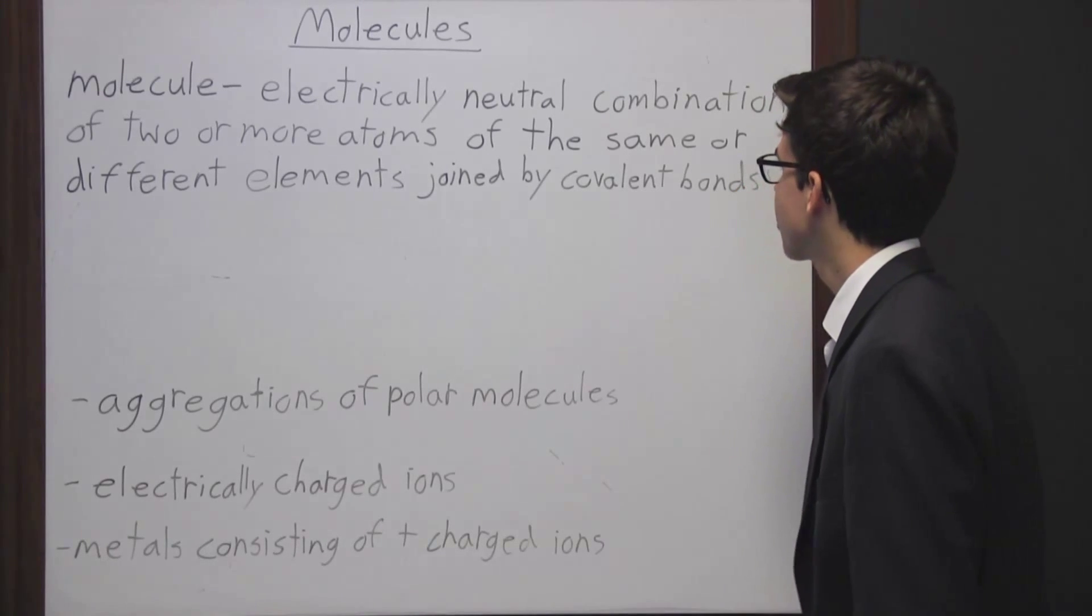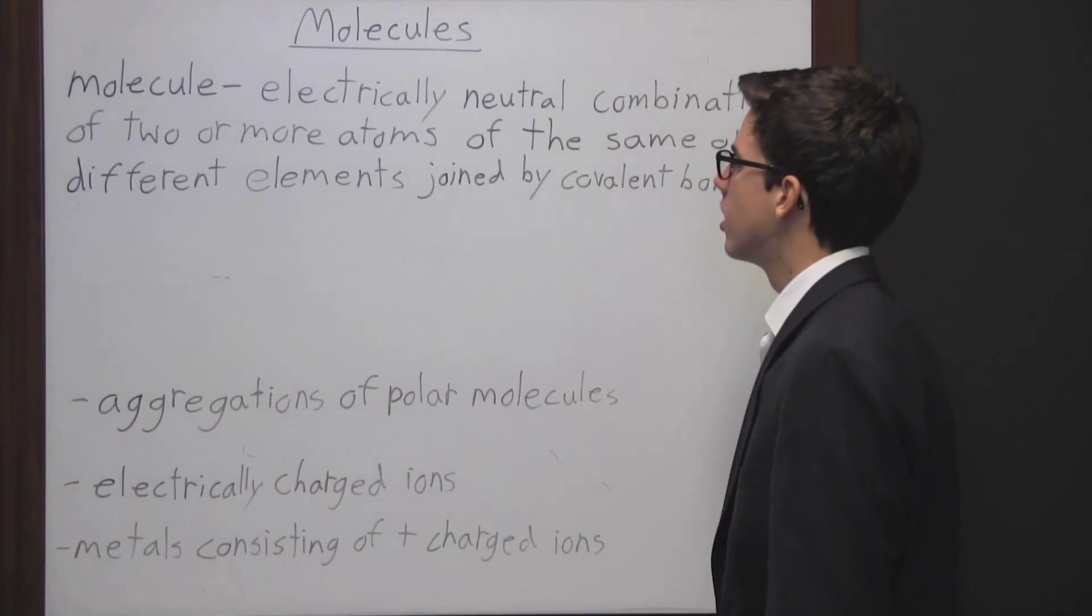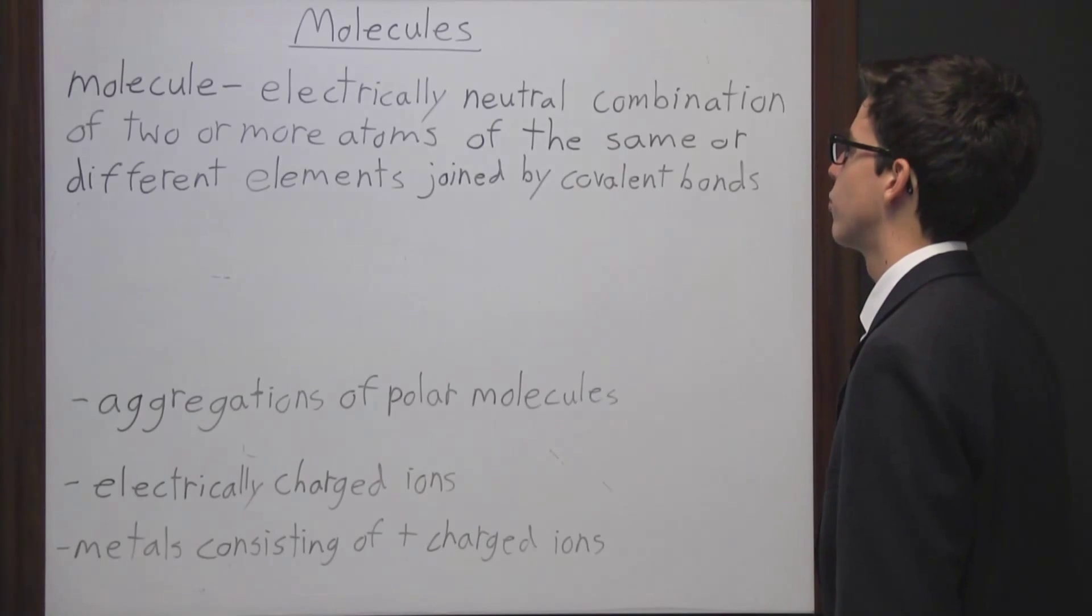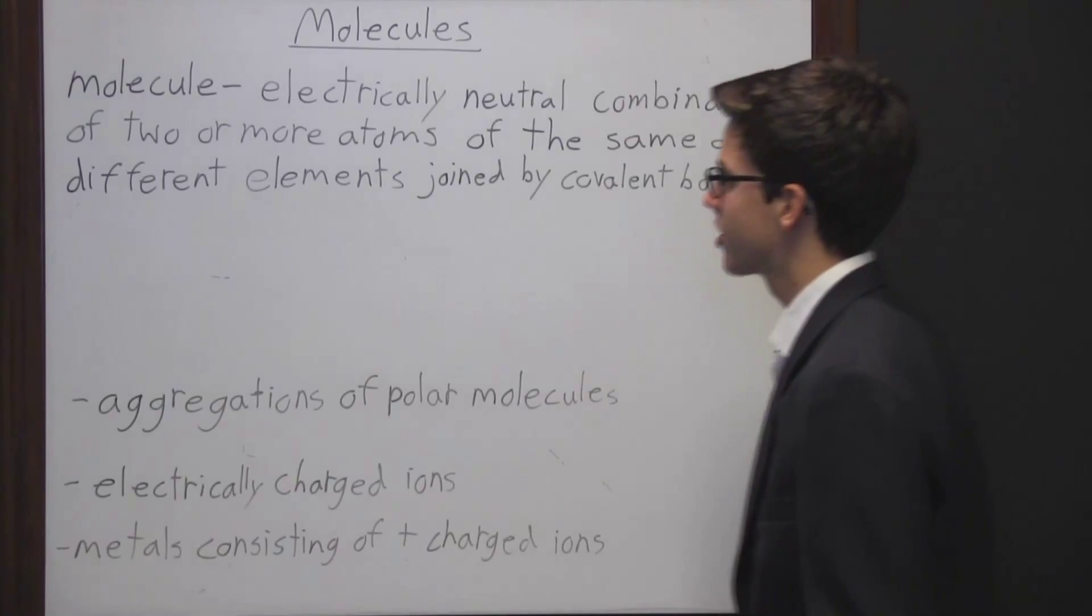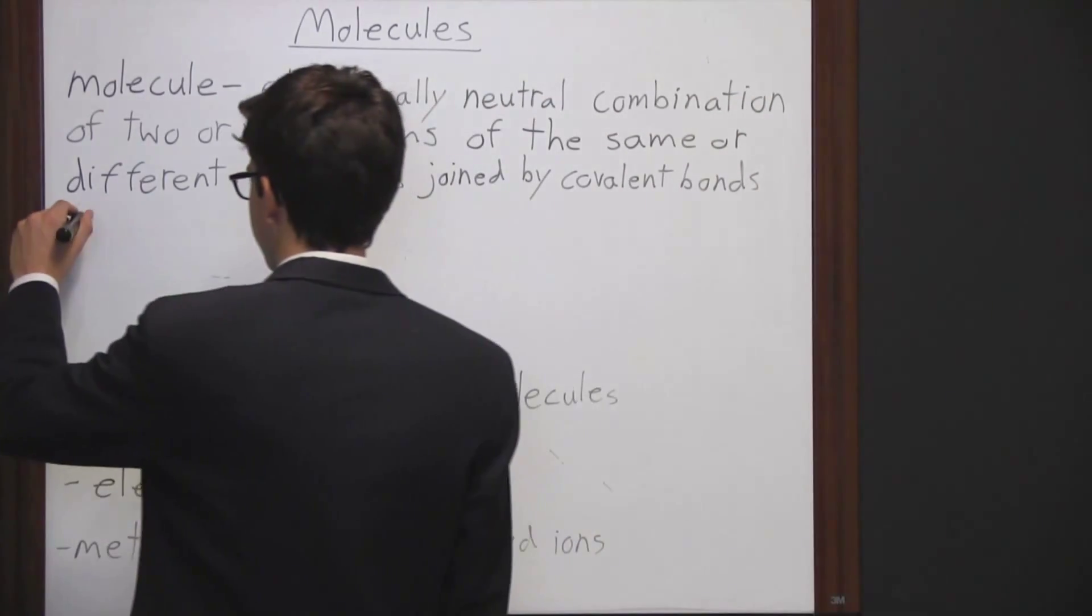A molecule is an electrically neutral combination of two or more atoms of the same or different elements joined by covalent bonds. So I want to go ahead and break down this definition a little bit to make sure we really understand it.